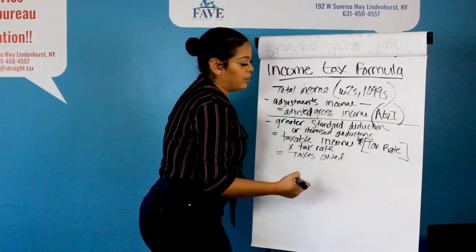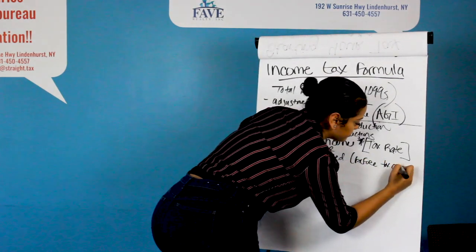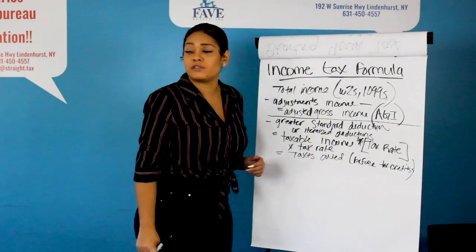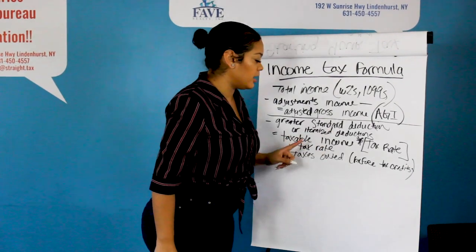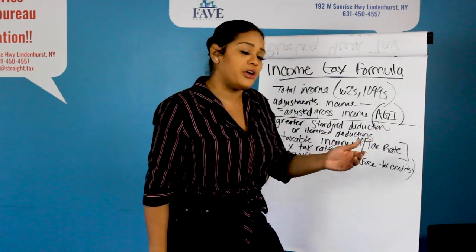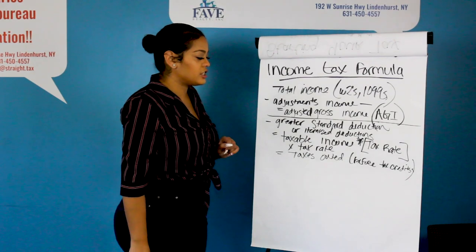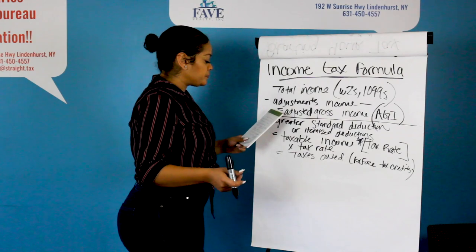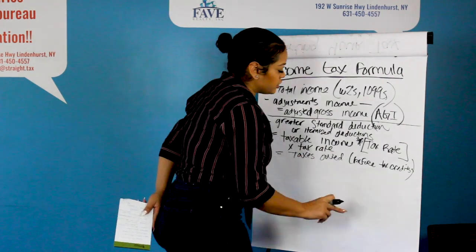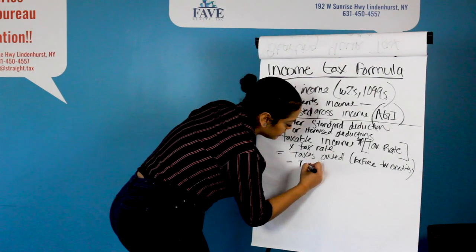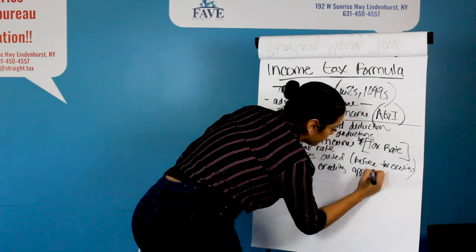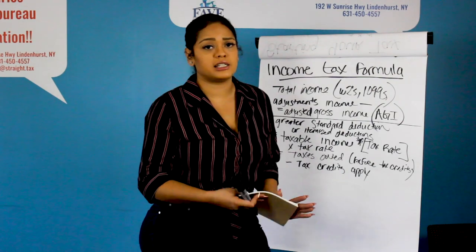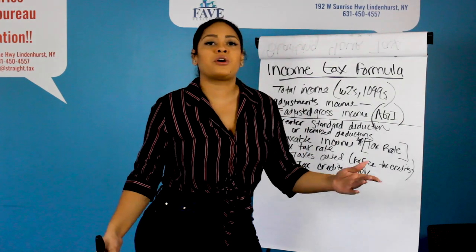Now, this amount of taxes owed is going to be before any tax credits are applied, because we haven't gotten to credits yet. So once we get to our taxable income, the software's going to do our calculations automatically — it'll multiply the taxable income times your tax rate, and that's going to equal the amount of taxes you now owe on that income. Once we get past what the taxes owed is, what comes next? A majority of us get credits — the earned income credit, child tax credit, child dependent care credit, American Opportunity Credit, any one of these credits that apply to you.